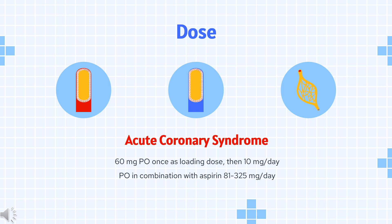Dosing for Acute Coronary Syndrome: For reduction of thrombotic cardiovascular events, including stent thrombosis, in patients with ACS managed by PCI — either unstable angina or NSTEMI, or STEMI when managed with primary or delayed PCI — the dose is 60 mg orally once as a loading dose, then 10 mg per day orally, in combination with aspirin 81–325 mg per day. If the patient weighs less than 60 kg, consider 5 mg per day orally, because of potentially increased bleeding risk; efficacy and safety have not been established at this dose.